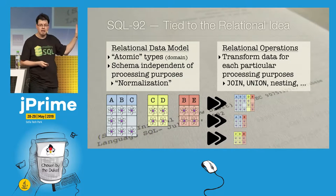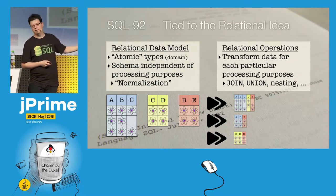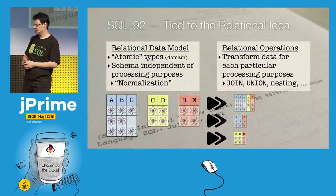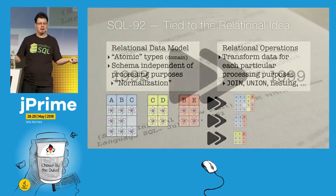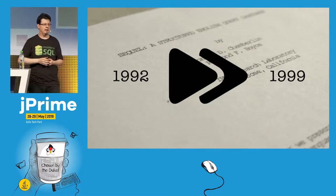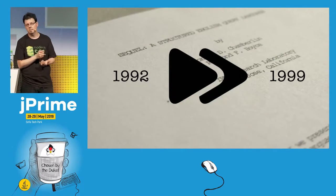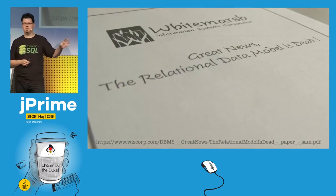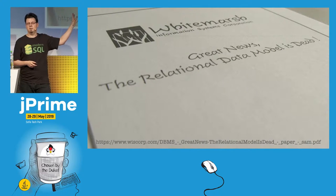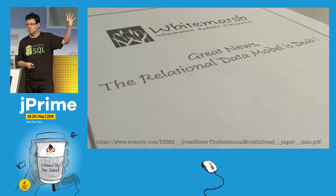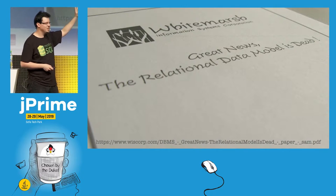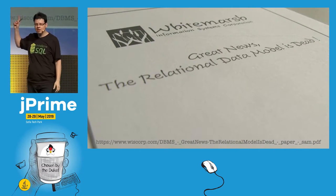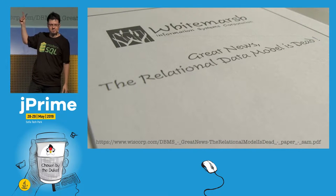At the time of SQL 92, it was mostly about joining — who knows joins? Yeah, everybody. And then there was the big bang: the year '99, when the next standard release came out. It was really a big bang. I'll give you a quote from a paper published at that time: 'Great news! The relational data model is dead.' You could take this nowadays as a clickbait title — nobody likes the relational data model.